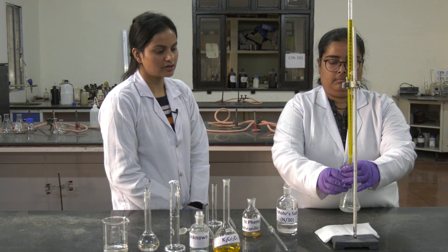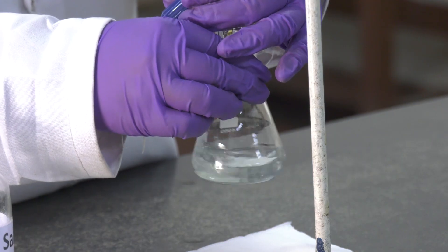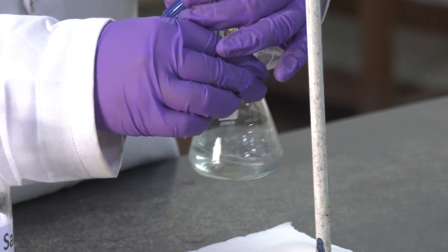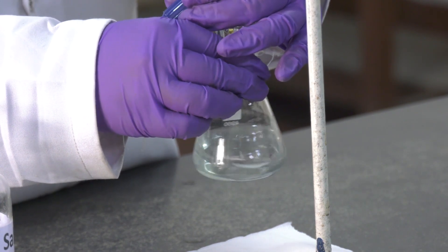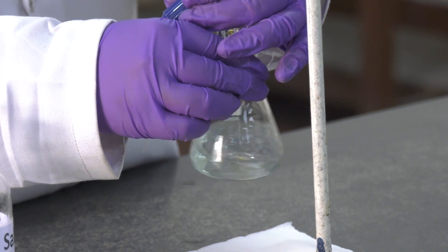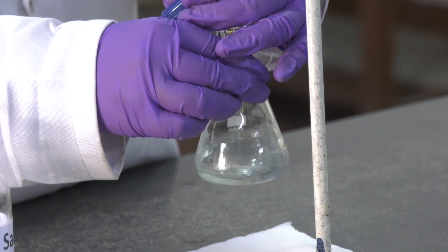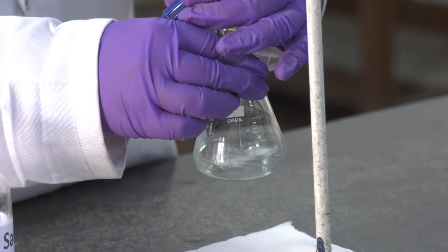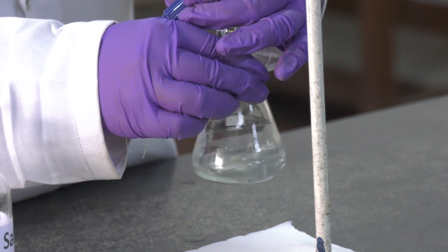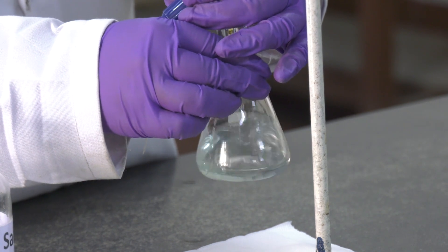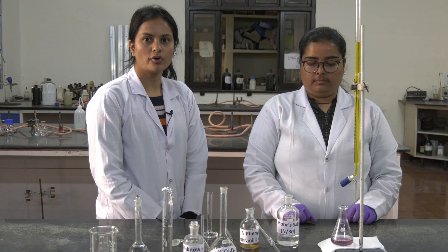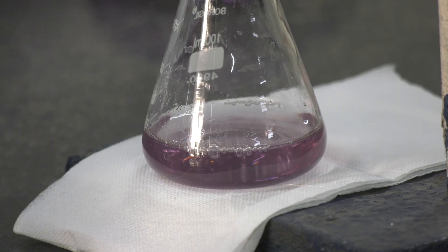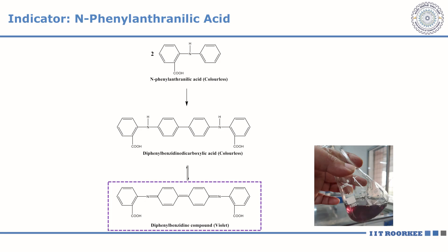Once the green colour appears, this pale green colour is due to the presence of chromium(III) ions in the solution. The colour will disappear at the end point when all the ferrous ions get converted into ferric ions. Our indicator used here will get oxidized only after the complete consumption of Fe²⁺ ions. At the end point, a sharp change in colour is observed, changing from green to purple.